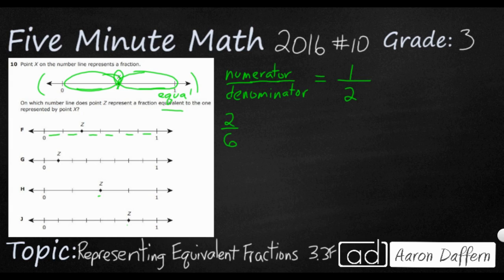Now look at G. We've got one, two, three, four, five, six, seven, eight. Eight total spaces. And this is on the second tick.